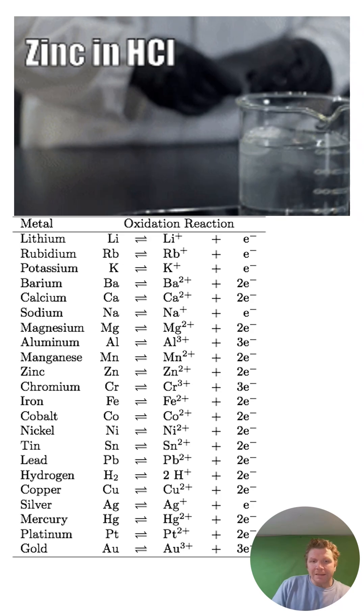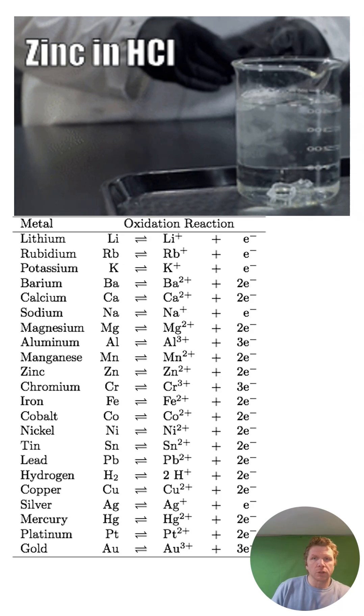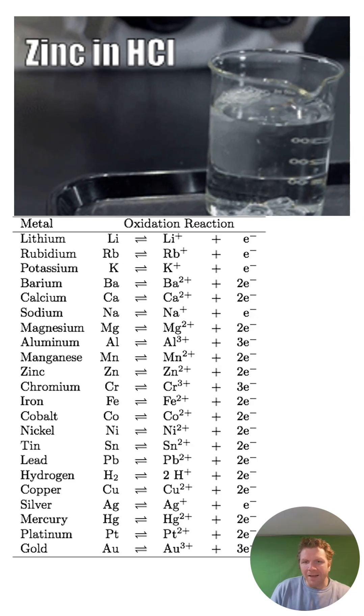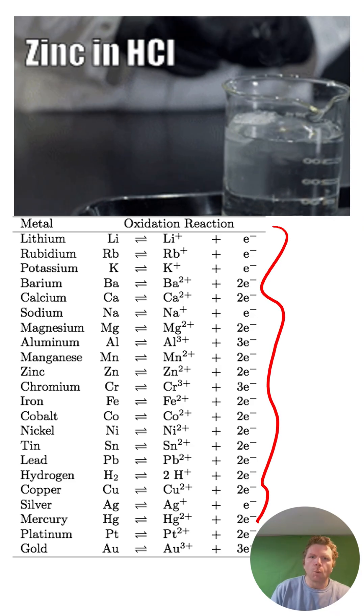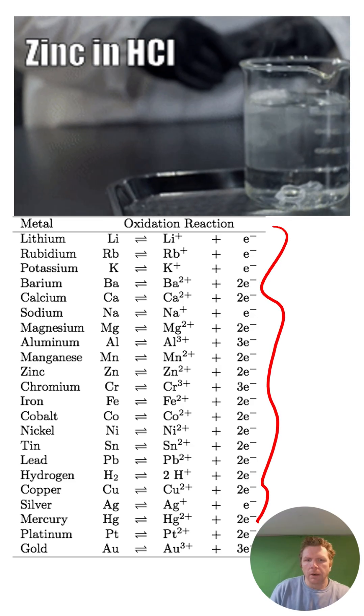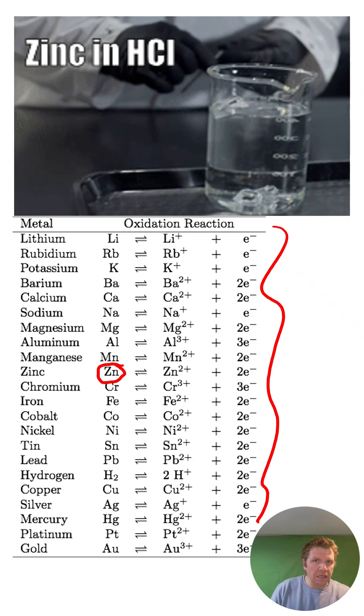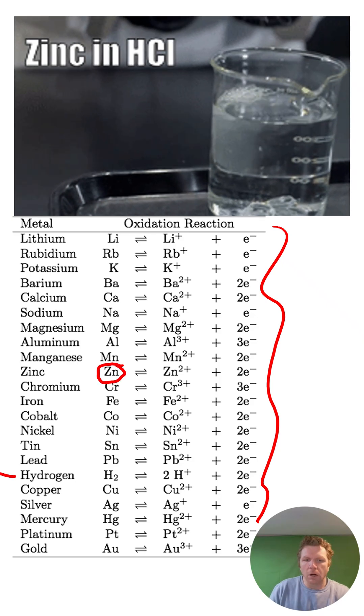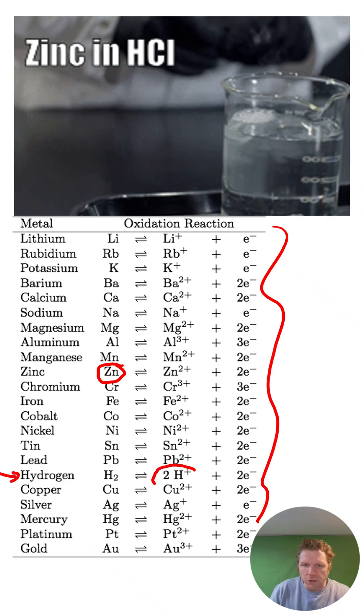Now, the reason that this reaction is taking place is very similar to whenever you mix a metal with an ionic solution. Well, let's find on the activity series chart right here where these two different substances are. Zinc metal, or zinc in its elemental form, has been dropped in a solution or an acid solution with a bunch of hydrogen ions.